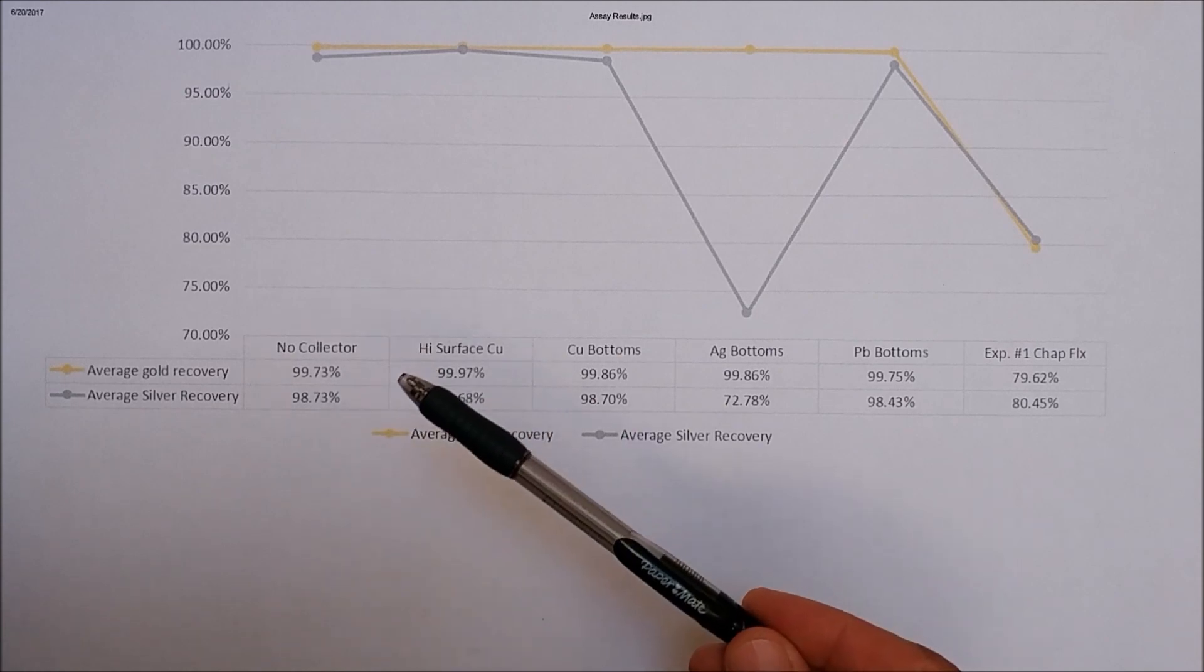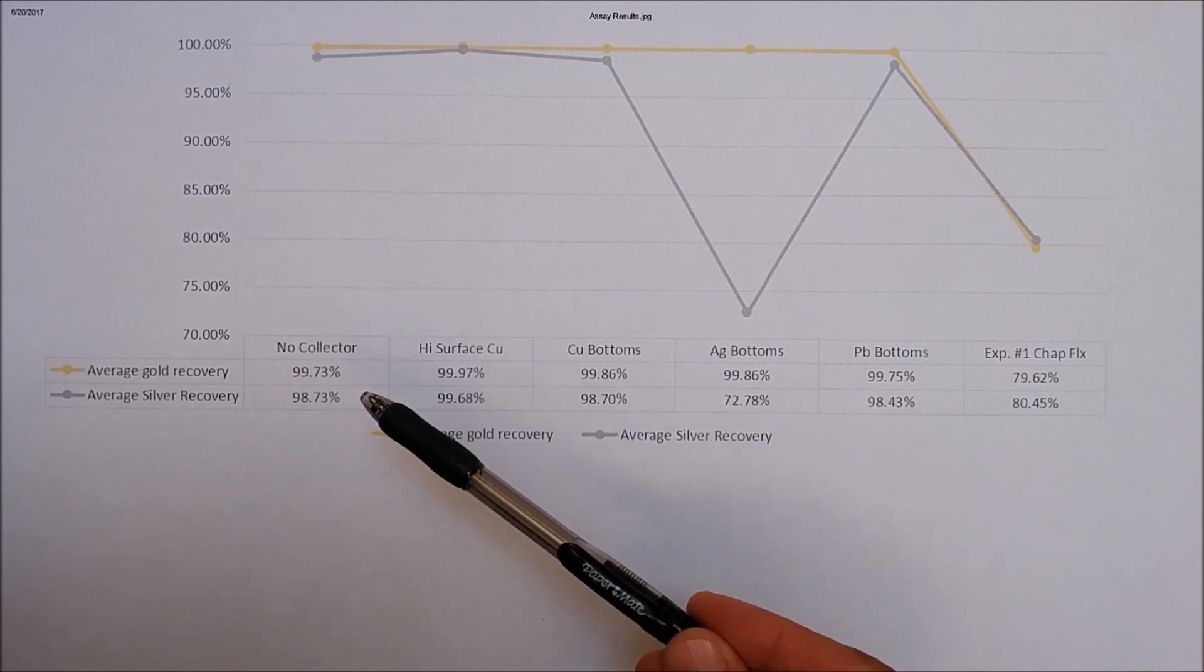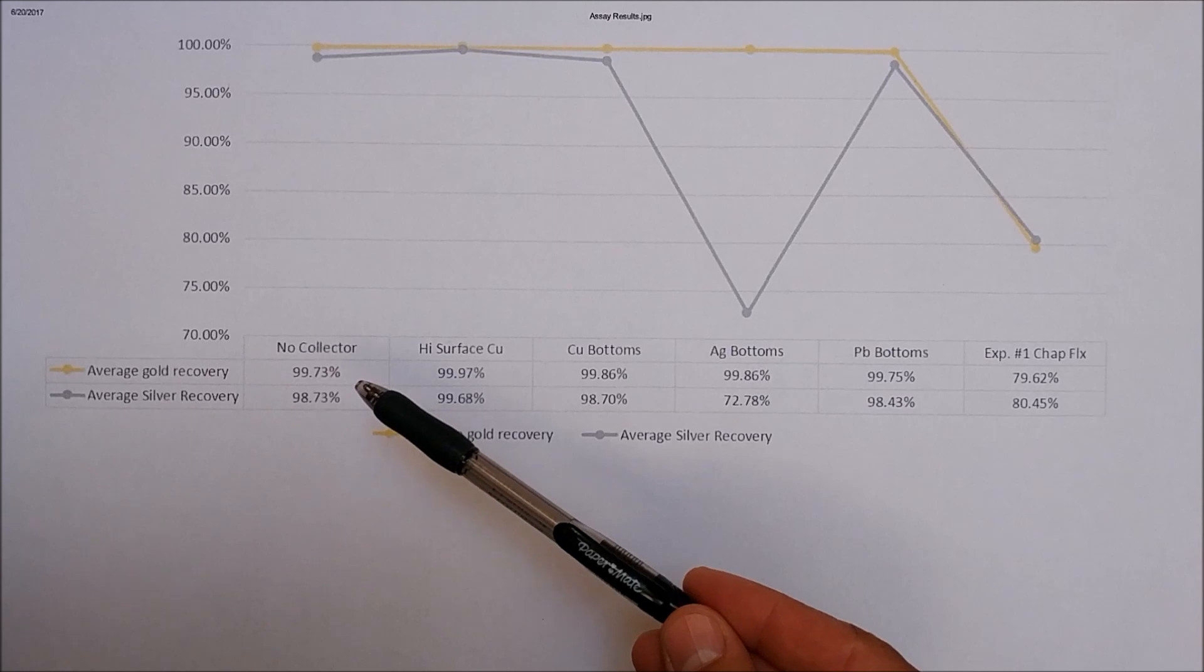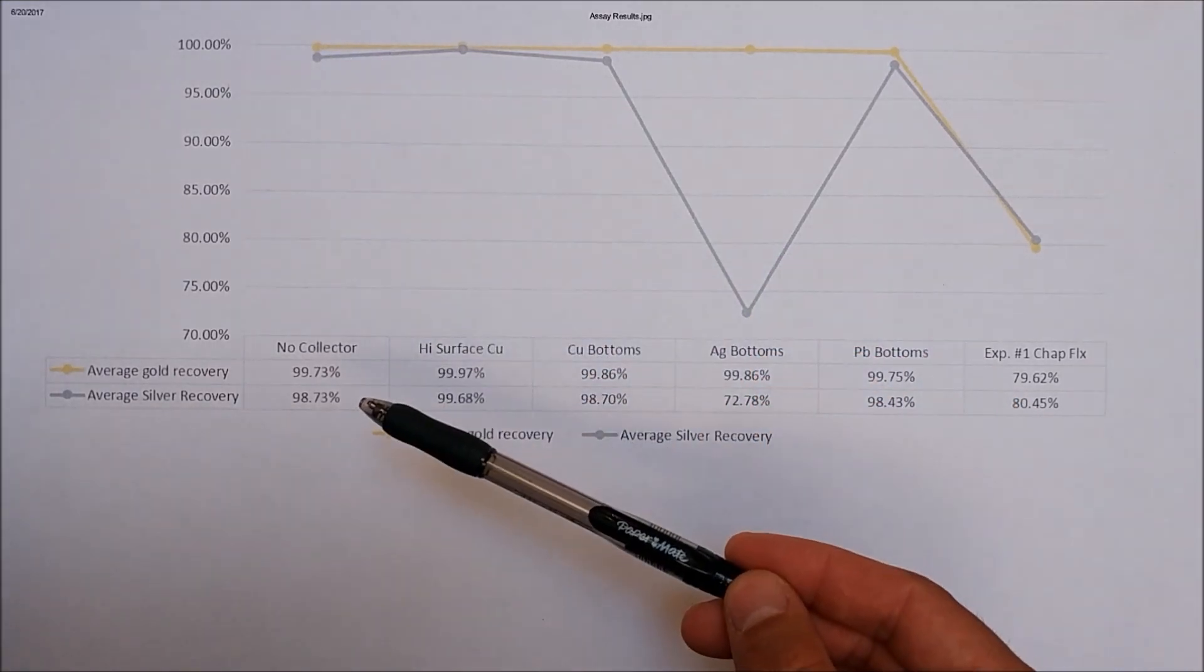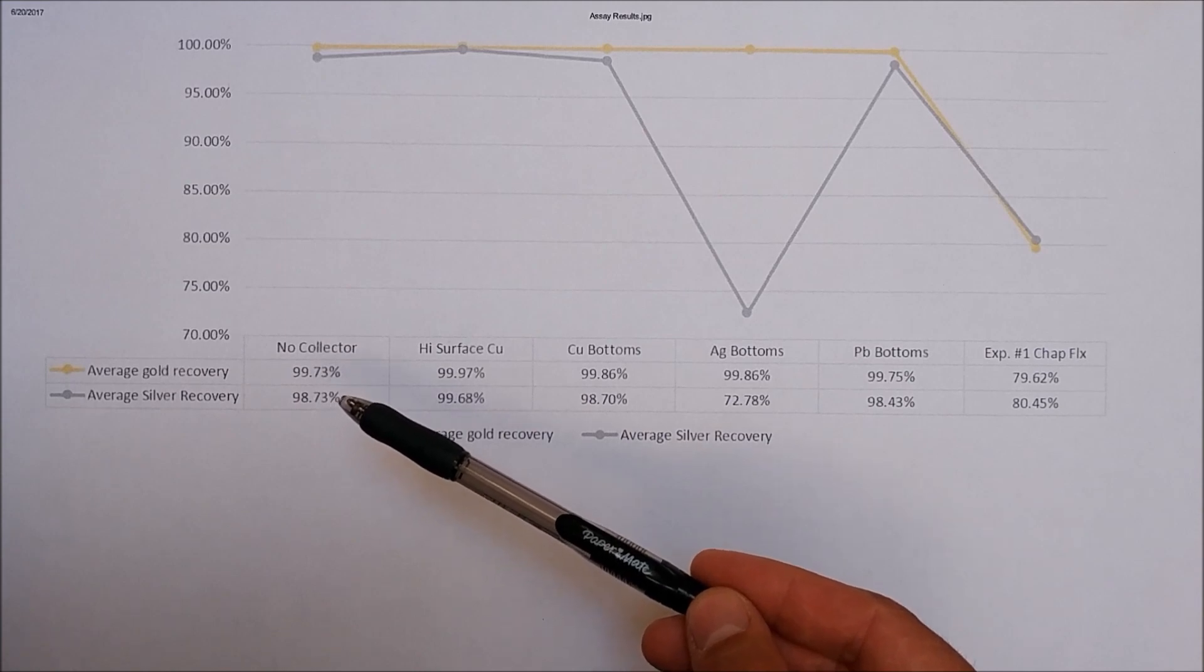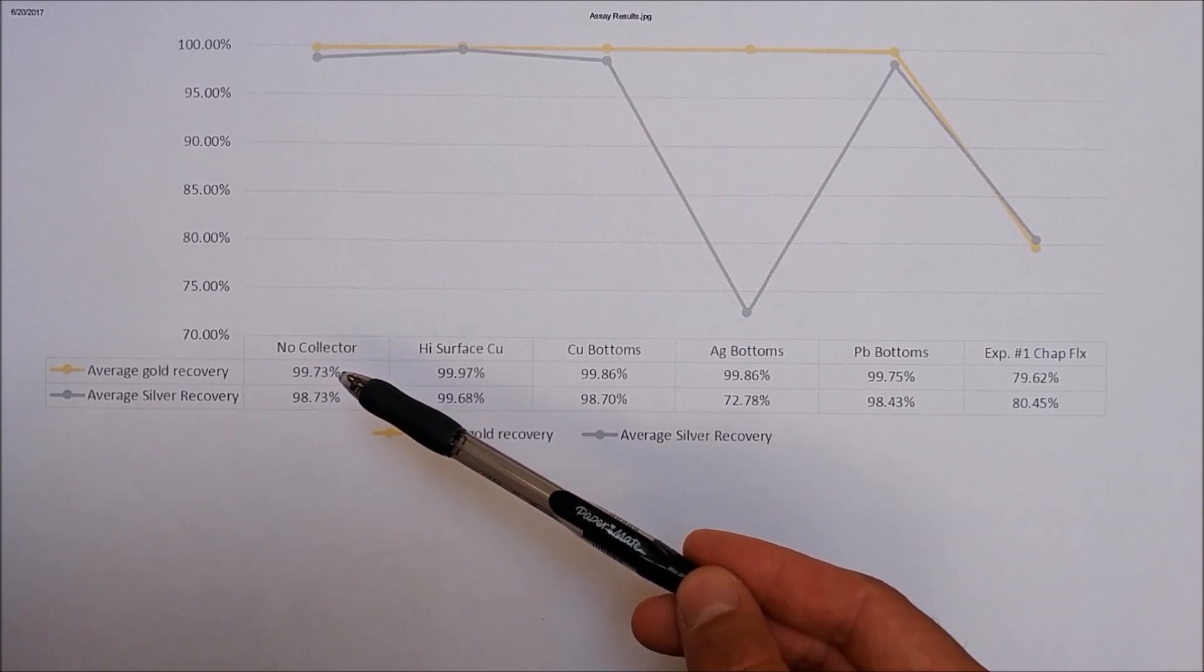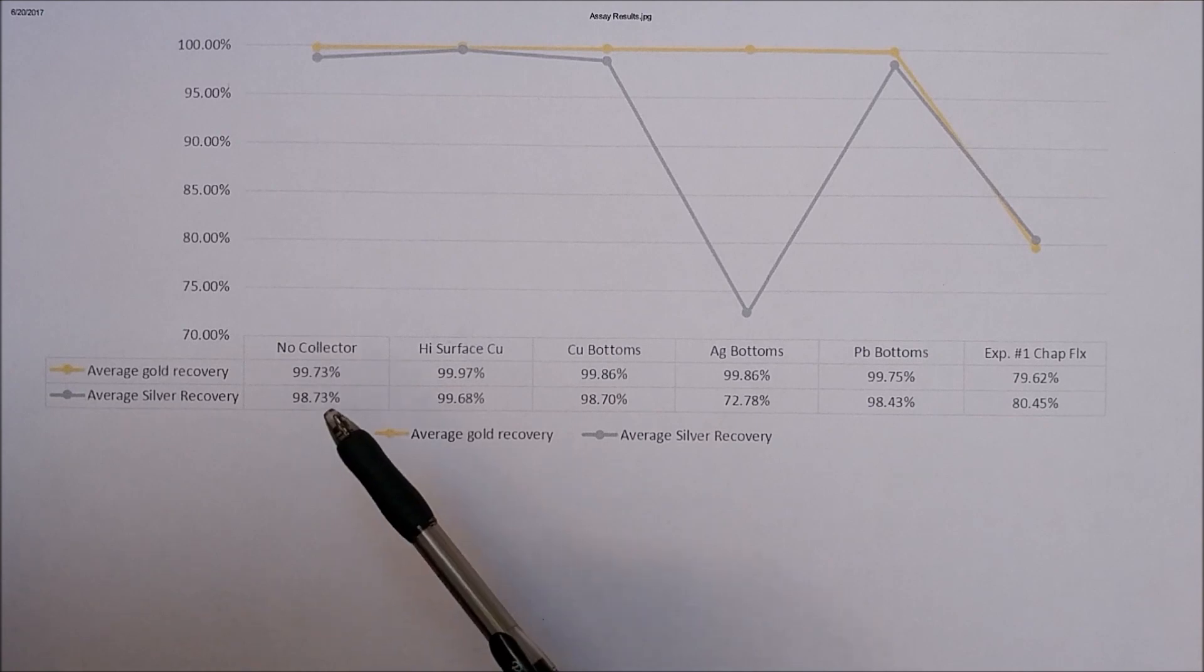So the first thing you'll notice is that even with no collector metal, that little bit that we reduced out ended up with fantastic gold recovery and equally as good silver recovery. I mean, 99% silver and 99 plus percent gold. So that went fantastic.